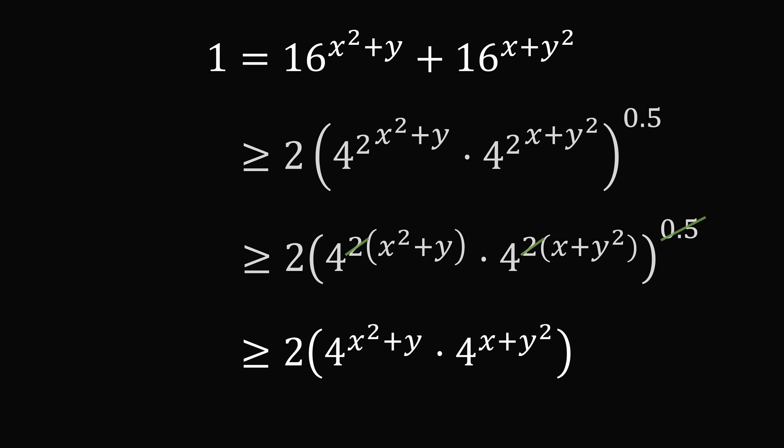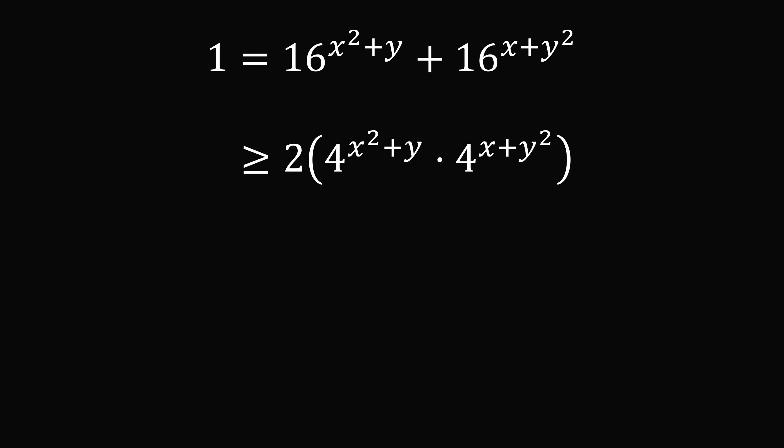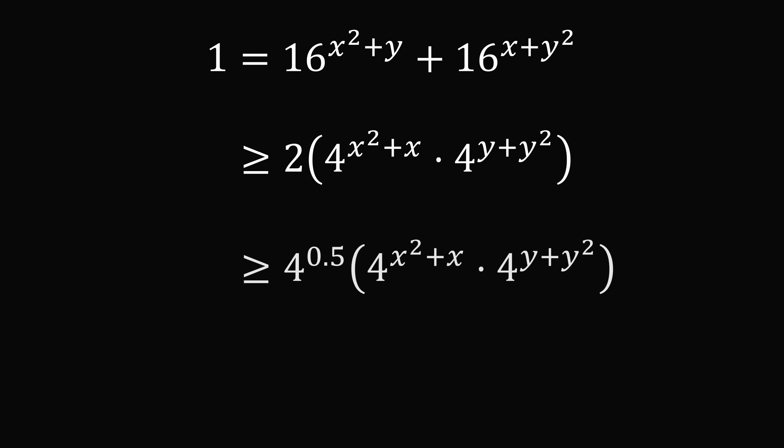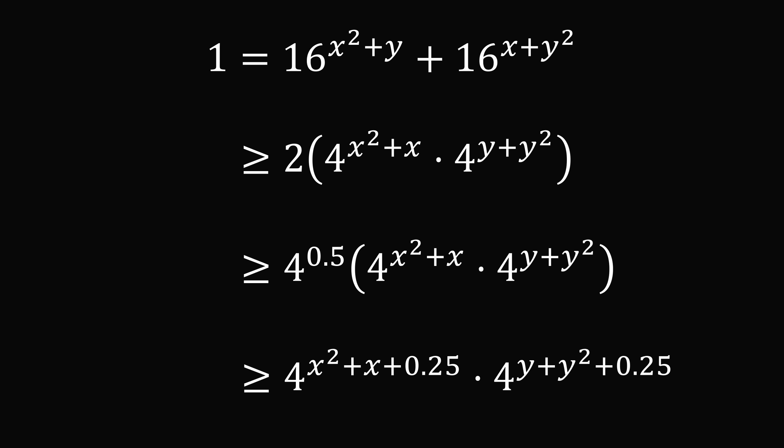Now, this 2 and this 0.5 will cancel out in each of these terms. From here, we will further simplify the exponents. We will group the x terms in one exponent and the y terms in the other. So we have 4 to the power of x squared plus x, multiplied by 4 to the power of y plus y squared. Then 2 is equal to 4 to the power of 0.5, and 0.5 is equal to 0.25 plus 0.25. So we will put 4 to the power of 0.25 in each of these exponents in the product.